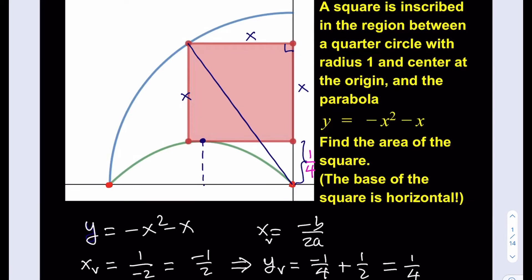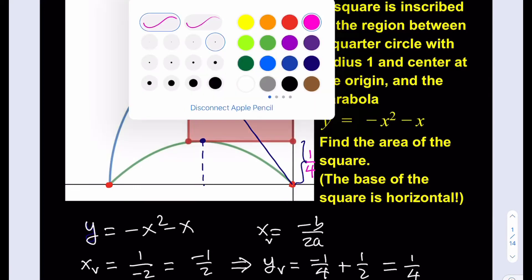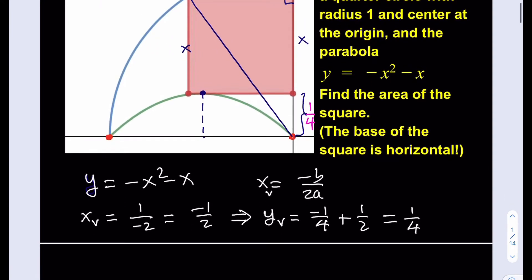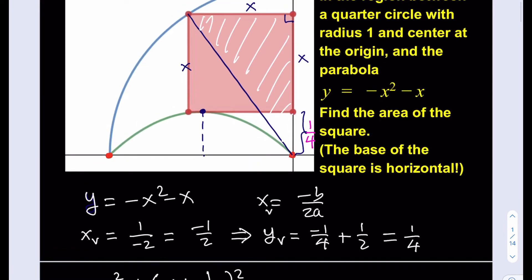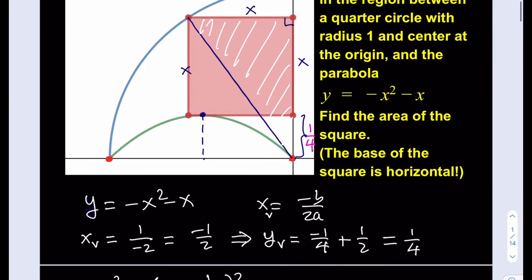Now we can set up the Pythagorean theorem. We have a right triangle, so it's going to look like: x squared plus (x plus one-fourth) squared equals the hypotenuse squared. The hypotenuse is actually the radius of the quarter circle, which is 1. So 1 squared equals 1.